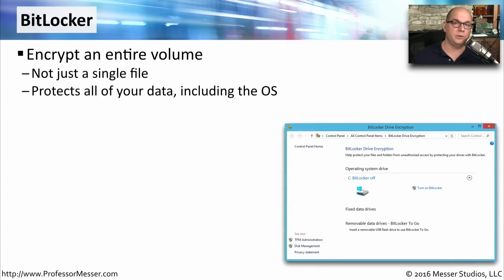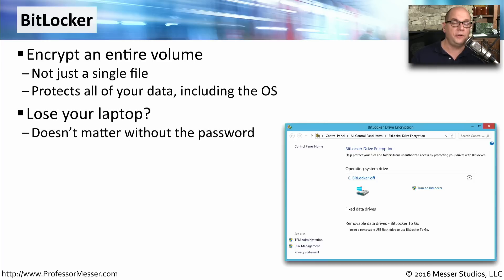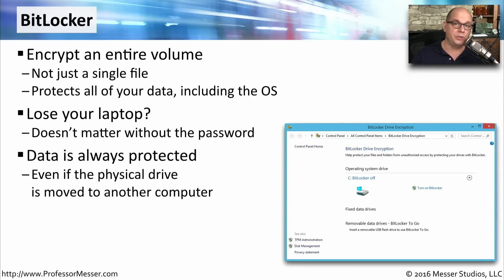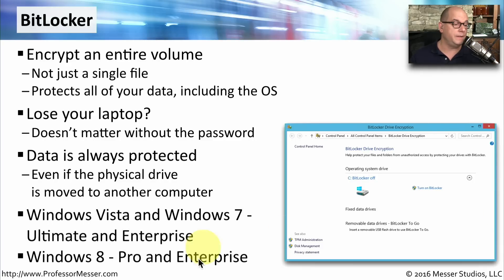Some editions of Microsoft Windows include a data encryption function called BitLocker, designed to protect an entire drive — not just a single file, but the entire drive including the operating system. This is especially useful for laptops and mobile devices that might leave the building and get lost or stolen. Even if you remove that drive and plug it into a completely different system, you still cannot access that data without the correct credentials. BitLocker is found in the Ultimate and Enterprise editions of Windows Vista and 7, and in the Pro and Enterprise editions of Windows 8 and 8.1.